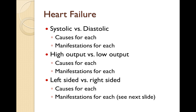The book breaks heart failure down into several different categories. The article really focuses on systolic and diastolic. Starting with systolic — that is an impaired ejection of blood from the heart during systole, or during ventricular contraction. In systolic failure, you have a decrease in contractility and therefore a decrease in ejection fraction.